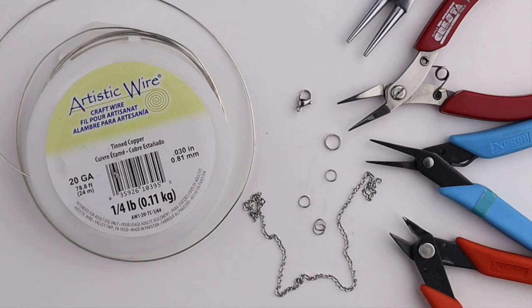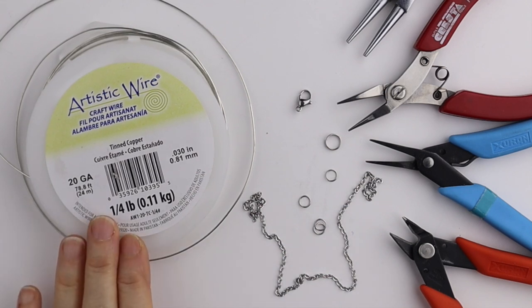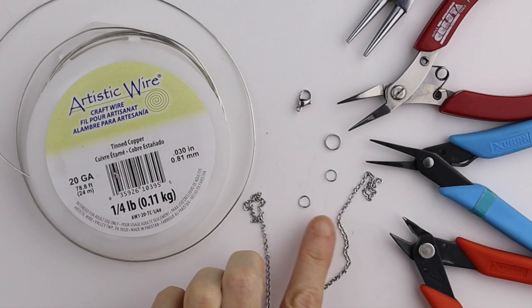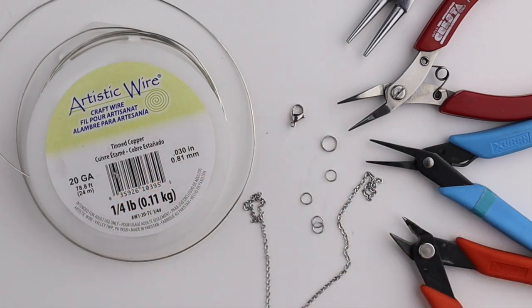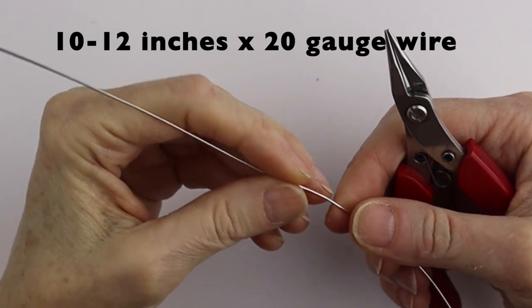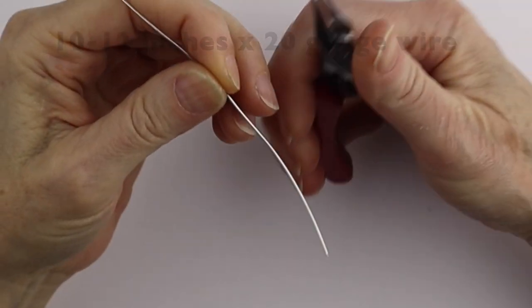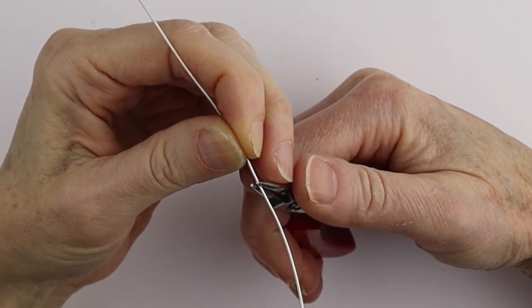What you're going to need for this project is 20 gauge wire, chain, jump rings, split ring, a lobster clasp, and my tools. I have about a 10 to 12 inch piece of wire and I'm just going to start at the top.